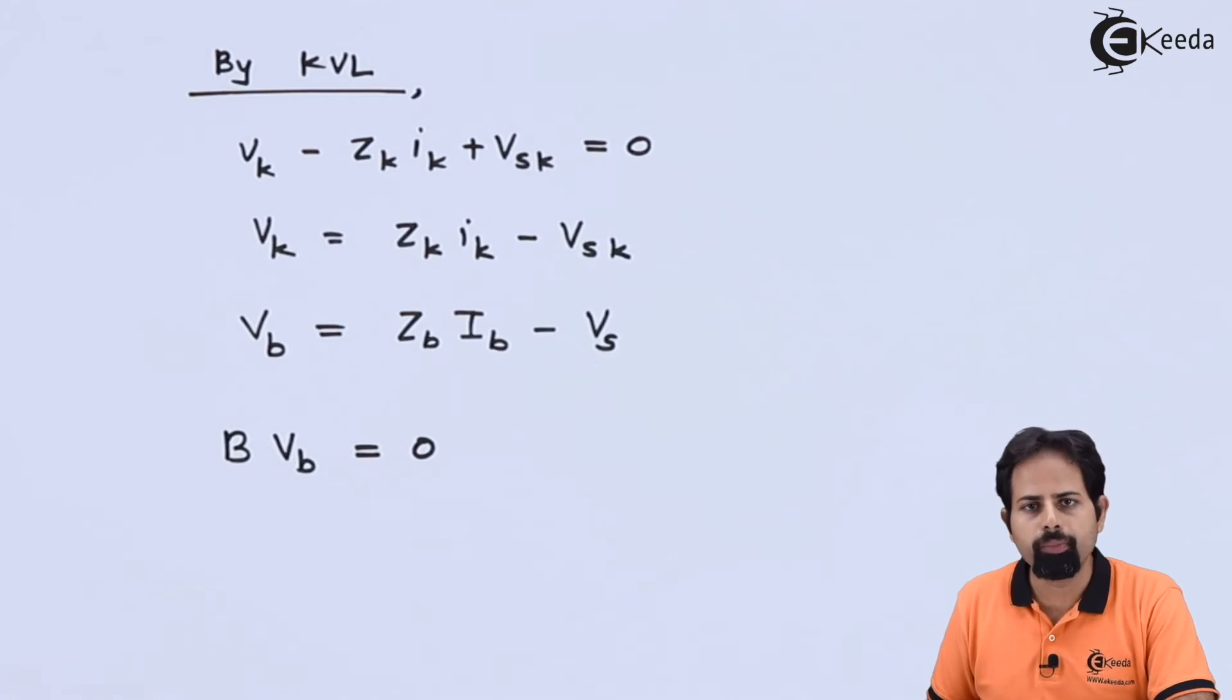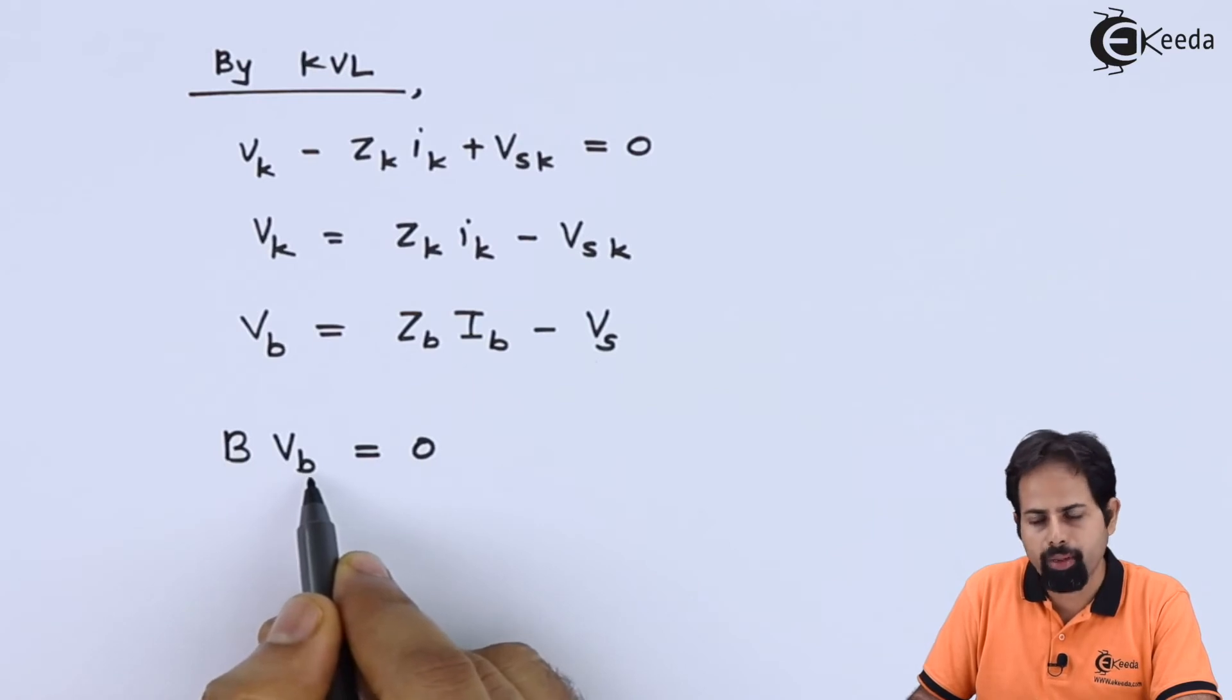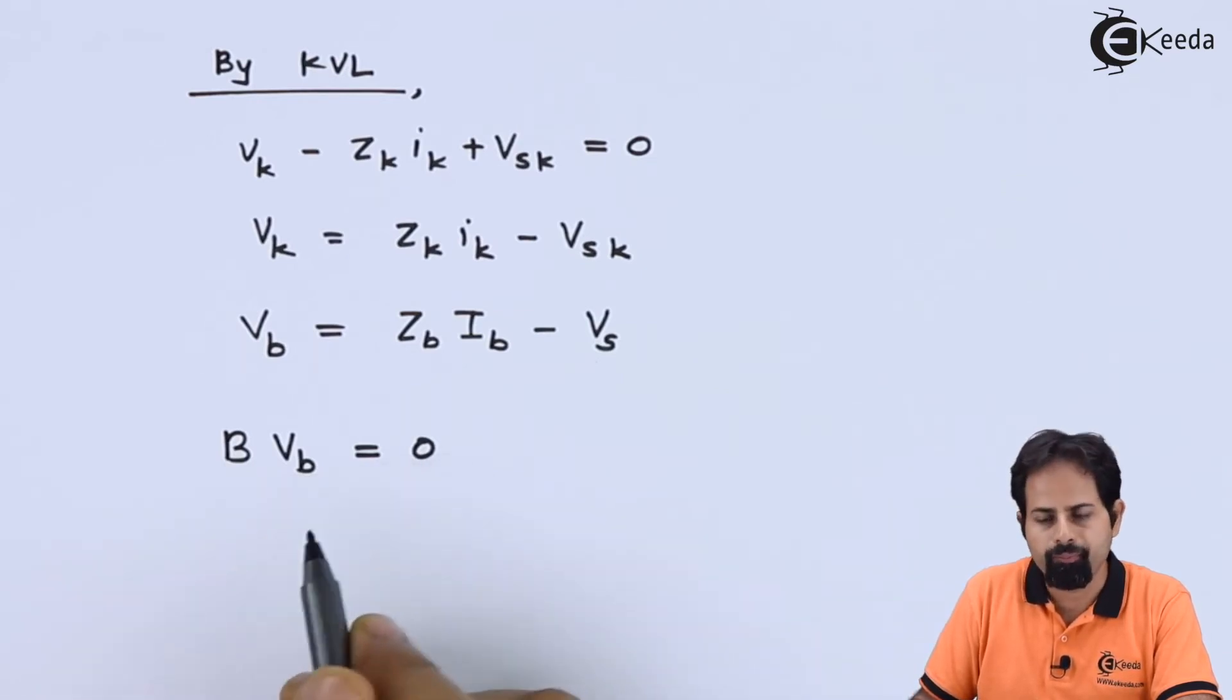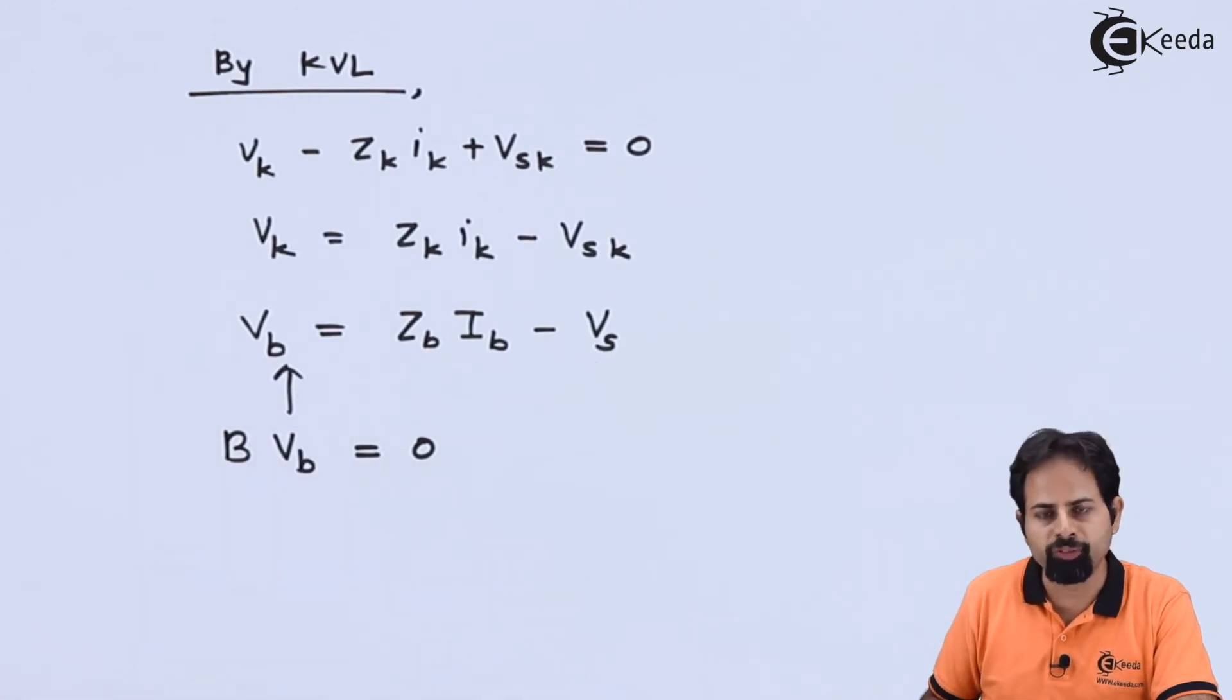Now we should know one identity which we have learned in tie set matrix topic and that identity is B into VB. These are all matrices of course. So matrix B multiplied by VB matrix is equal to 0. And now what we know is VB is this, so we will substitute it.